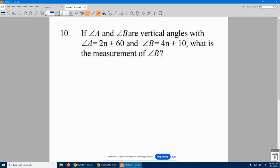All right, if angle A and angle B are vertical angles with A equaling 2n plus 60 and B equaling 4n plus 10, what is the measurement of angle B?